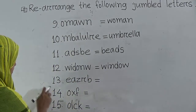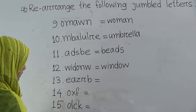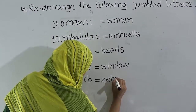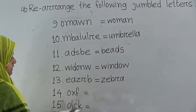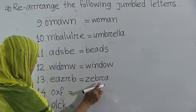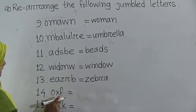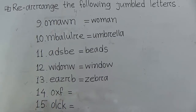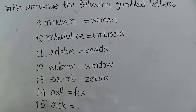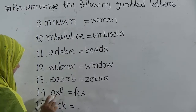Number 13: the given letters are E, A, Z, B, R, B. If we write Z-E-B-R-A, we get 'zebra.' This is the name of an animal, so you have to write Z-E-B-R-A — zebra. Number 14: the given letters are O, X, F. This is also the name of an animal. The word will be F-O-X — 'fox.' Say with me: F-O-X — fox.